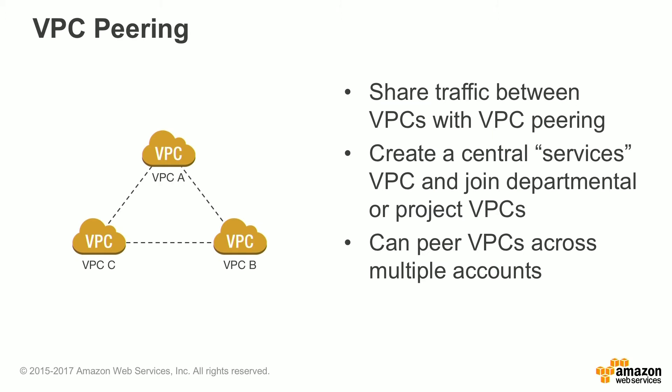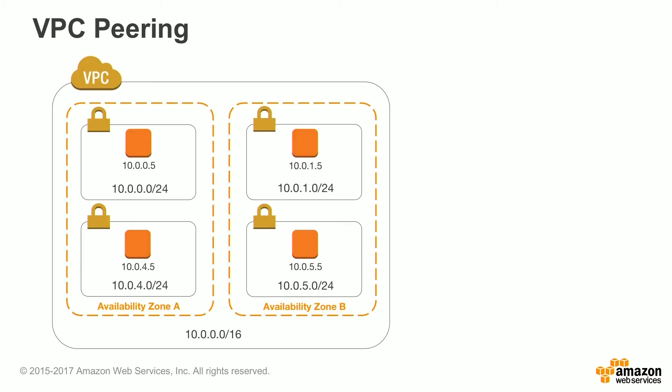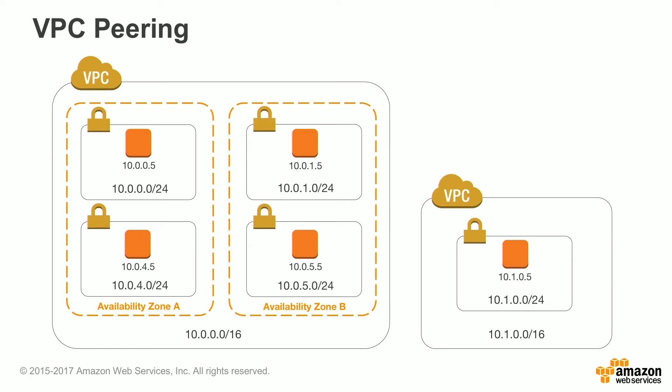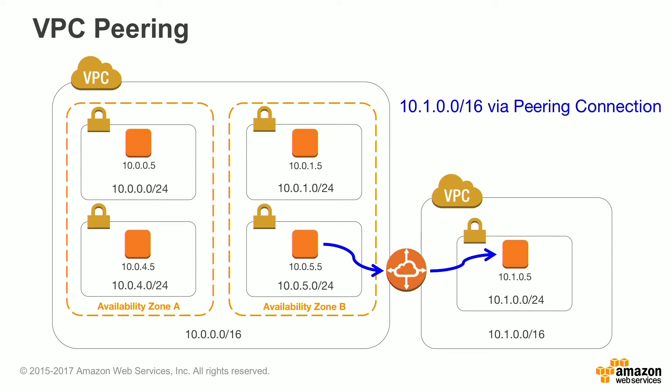VPC peering is the idea of connecting multiple VPCs with one another. You can connect VPCs between the same AWS account or across multiple AWS accounts. VPC peering works on an invitation model. An invitation is sent to connect from one VPC to the other VPC, and that invitation needs to be accepted before peering will happen. This can be done within one AWS account or across multiple AWS accounts.